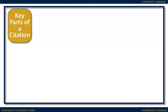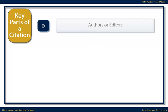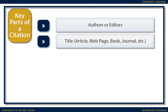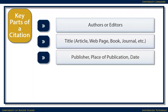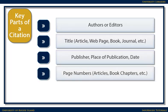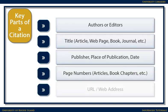Citations generally include the same key parts: authors or editors, the title, whether it's an article, web page, book, journal, etc., the publisher, the place of publication, the date the item was published, the page numbers if it's an article or a book chapter, and the URL or web address.